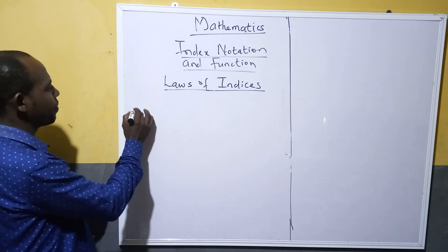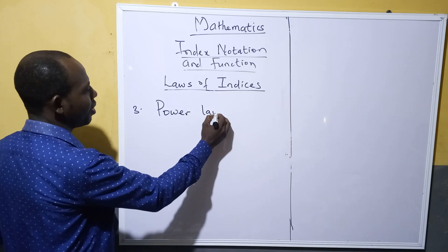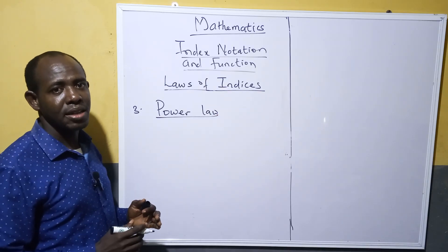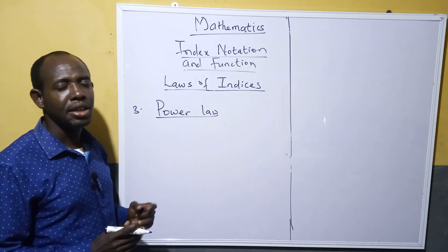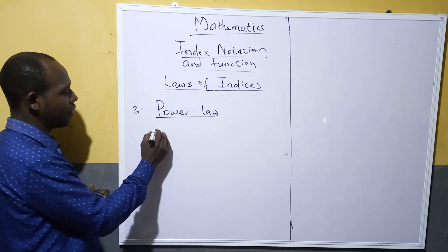We move on to the third law now. The third law is called power law. Power law states that any number that is raised to a power and raised to another power, then you multiply the two powers.